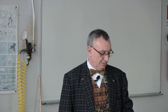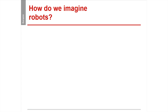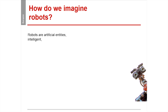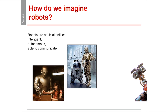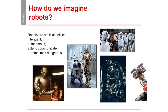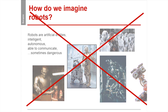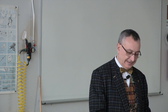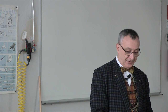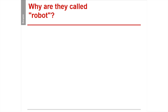How do we imagine robots? Generally as artificial, intelligent, autonomous entities able to communicate and interact — sometimes dangerous, as in many movies. But all these portrayals are just movies; they are not true. It's something that happens only in the fantasy of writers. Robots are something different.